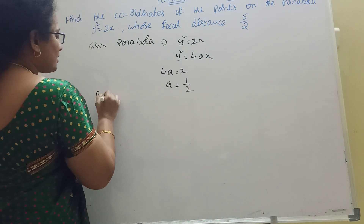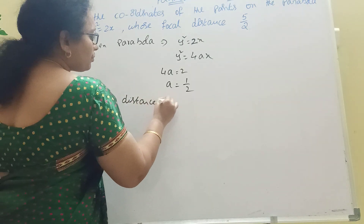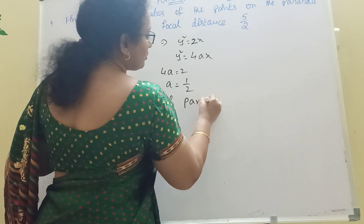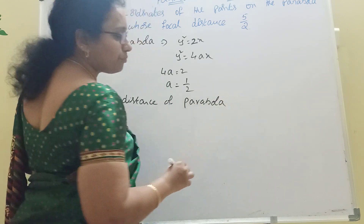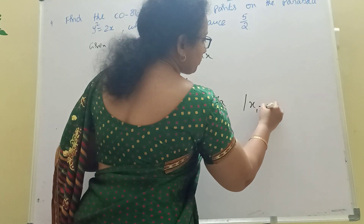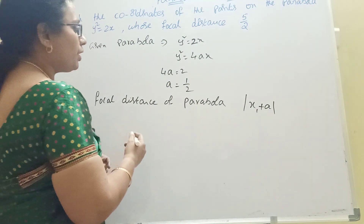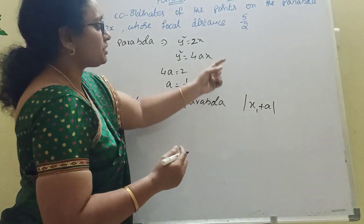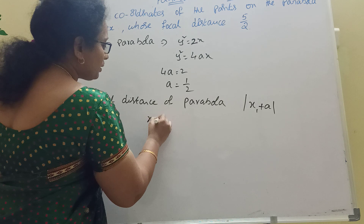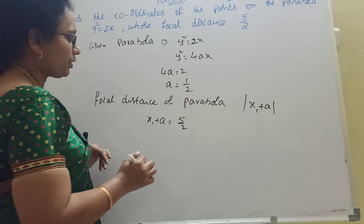Now we find the focal distance of the parabola. The formula for focal distance is modulus of (x₁ + a). This is the formula: |x₁ + a|. We are given that x₁ + a = 5/2.